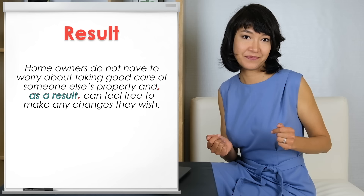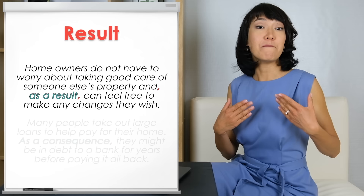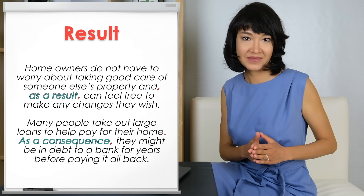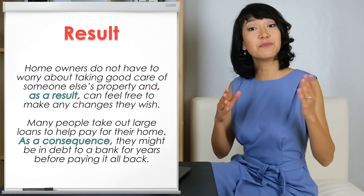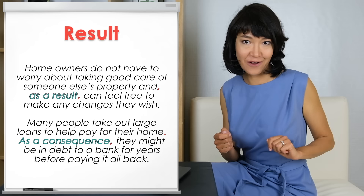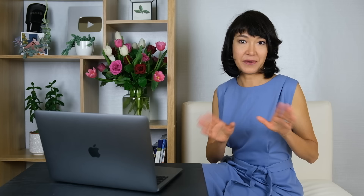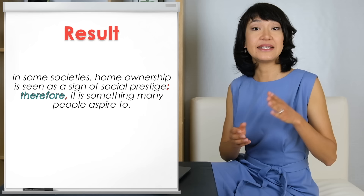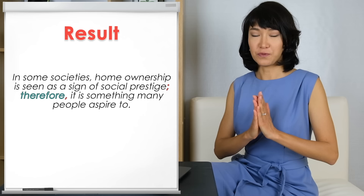Here is another example: 'Many people take out large loans to help pay for their home. As a consequence, they might be in debt to a bank for years before paying it all back.' See how we can either put these linking words at the beginning of a new sentence, or as part of just one sentence after AND, separated by commas before and after. Exactly the same is true for both THEREFORE and THUS — punctuation is very important. For example: 'In some societies, home ownership is seen as a sign of social prestige. Therefore, it is something many people aspire to.' We can also use a semicolon before THEREFORE.